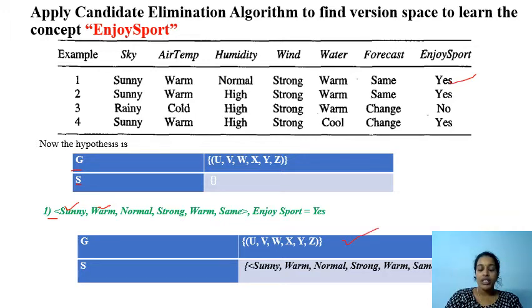Now just check with S. S rejects this positive instance, so we have to make changes accordingly. So this S becomes sunny, warm, normal, strong, warm, same.